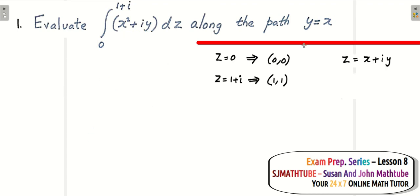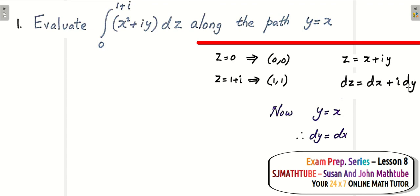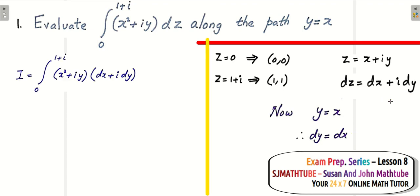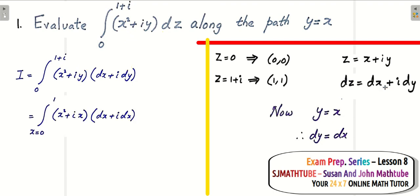Since z = x + iy, taking the differential on both sides gives dz = dx + i dy. Now since y = x, we have dy = dx. So I can replace dy with dx because I am converting everything into the variable x. Substituting, I replace dy with dx throughout.